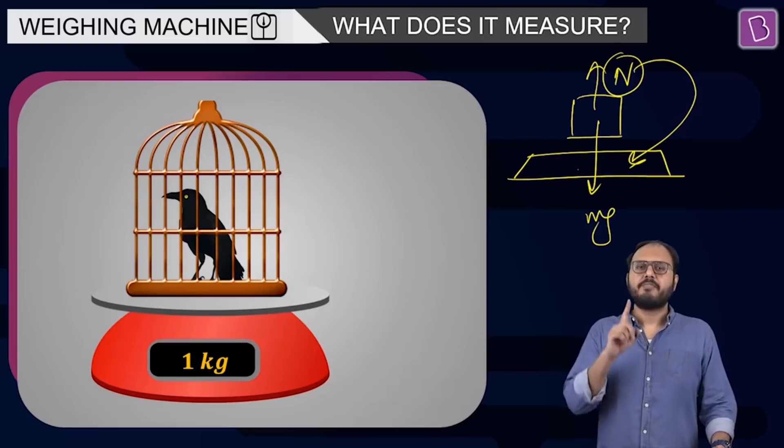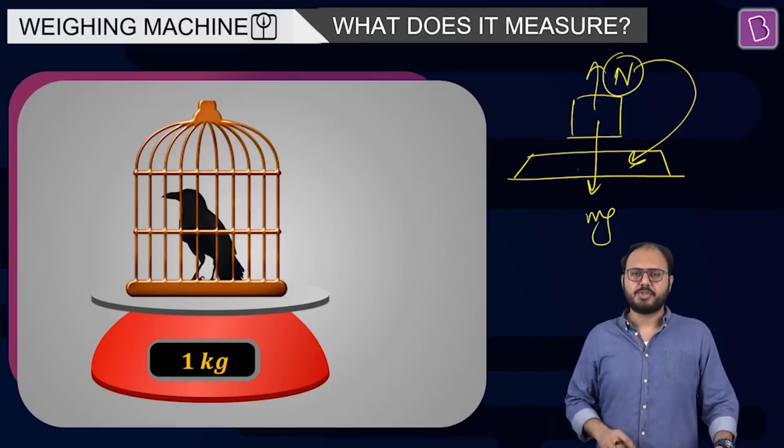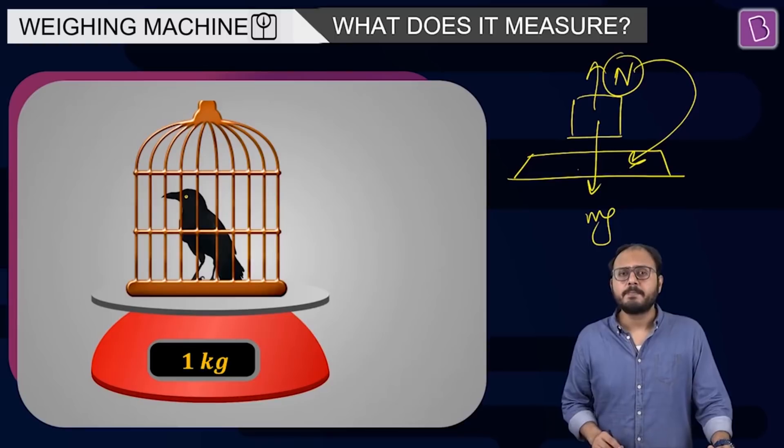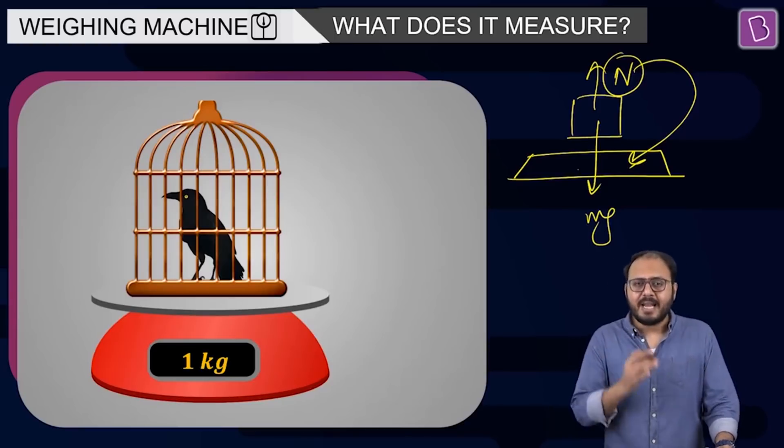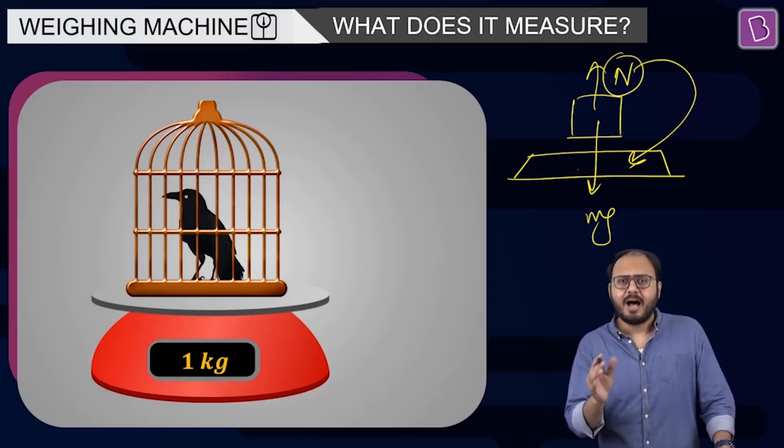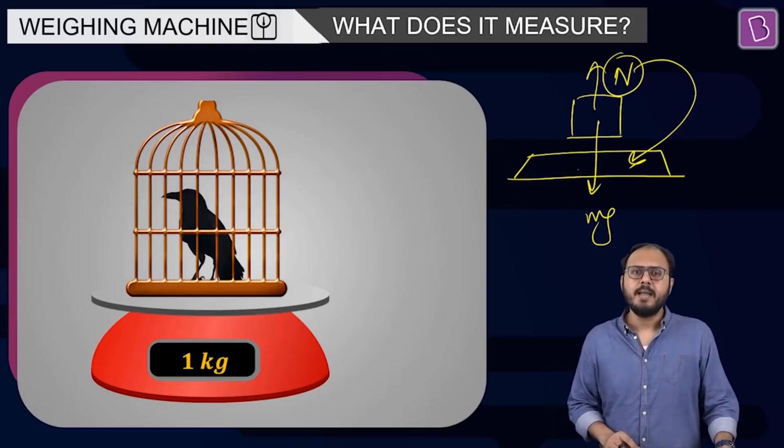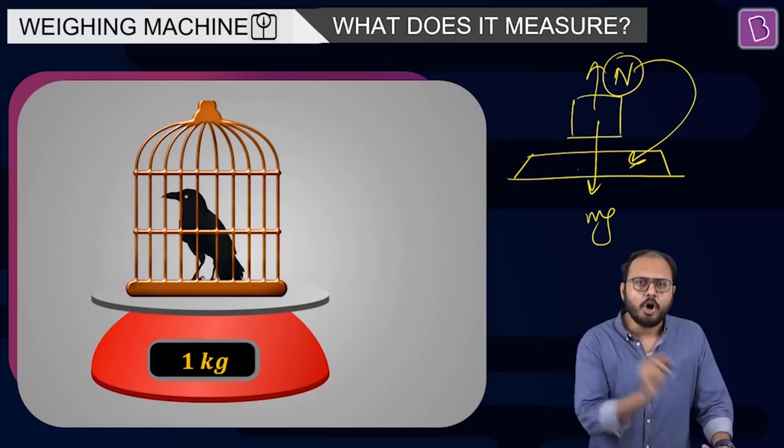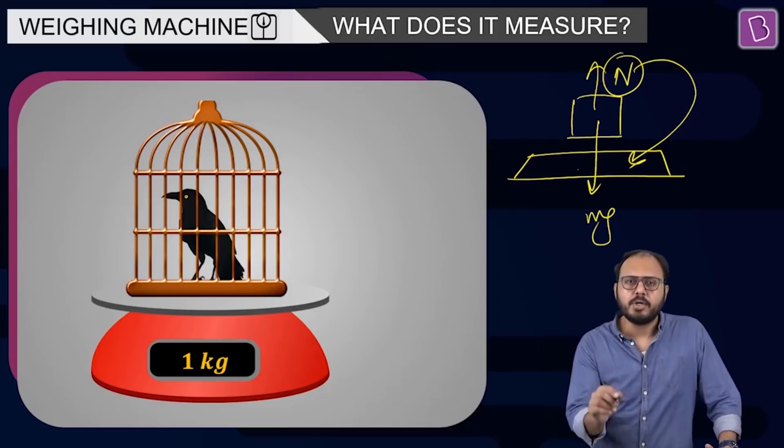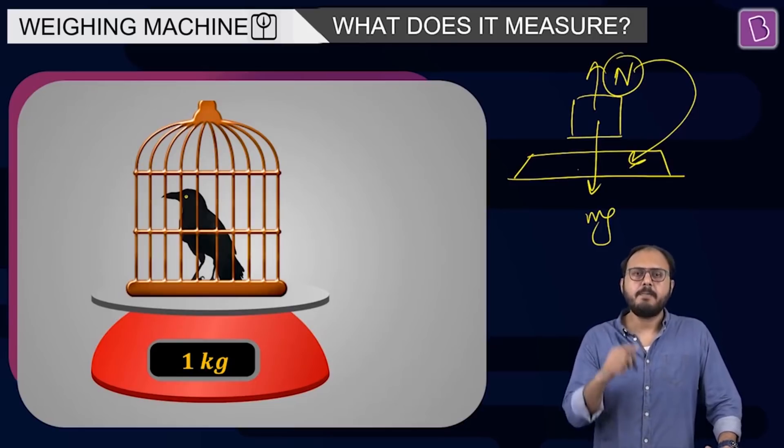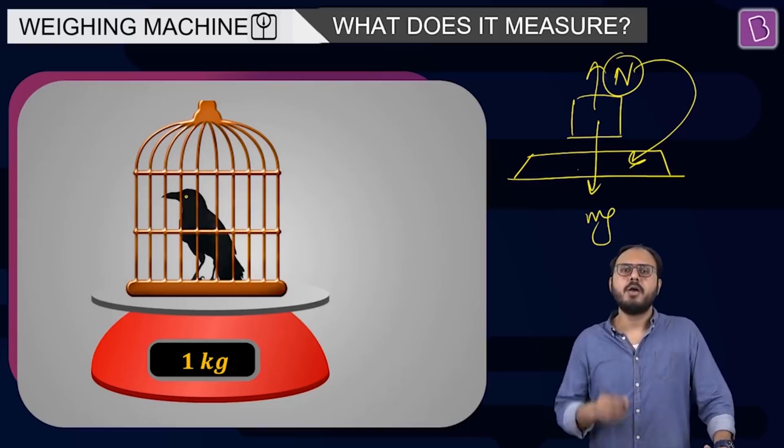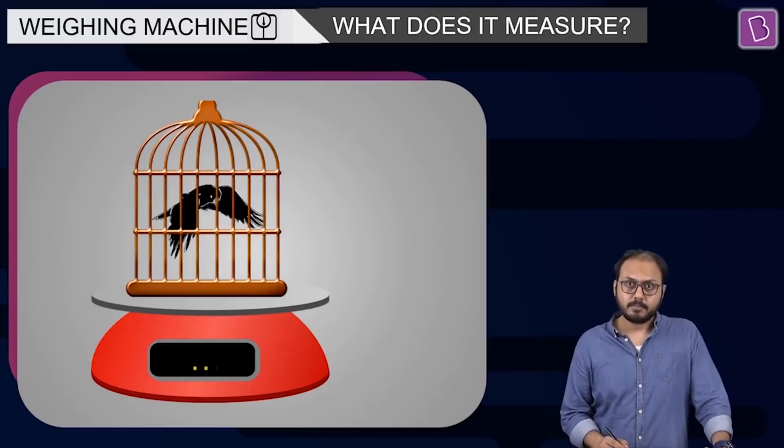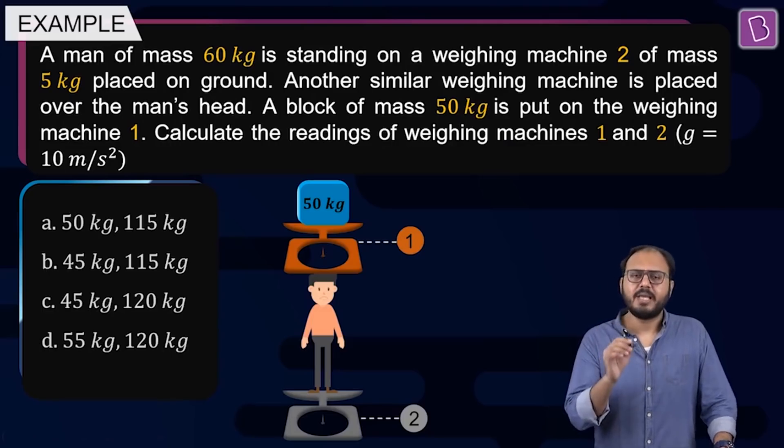Weighing machine measures the force with which you press the weighing machine. That's why, when you are standing on the weighing machine completely, it gives you a complete weight. And if your one leg is on the weighing machine and one leg is on the floor, it gives you half or equal to half of the reading. Why? Because you are pressing the weighing machine with half your weight. That means weighing machine does not measure weight. It measures the force with which it is being pressed. Weighing machine measures the normal reaction on the weighing machine at that instant. Did you get that? Perfect.